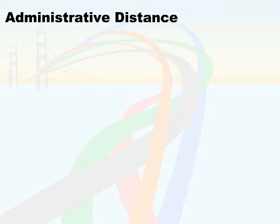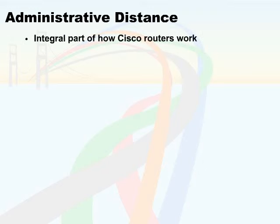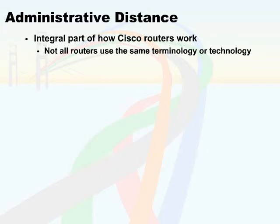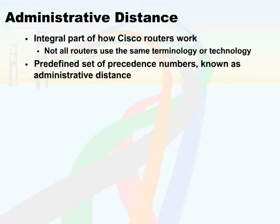Speaking of decisions, one of the things that's very important with IP routing is its use of administrative distance. This is something that you really need to master because it's a very integral part of how Cisco routers work. Not all routers use the same type of terminology or technology to make path determination, but Cisco routers base a lot of what they do on a predefined set of precedence numbers, which are known as administrative distance.